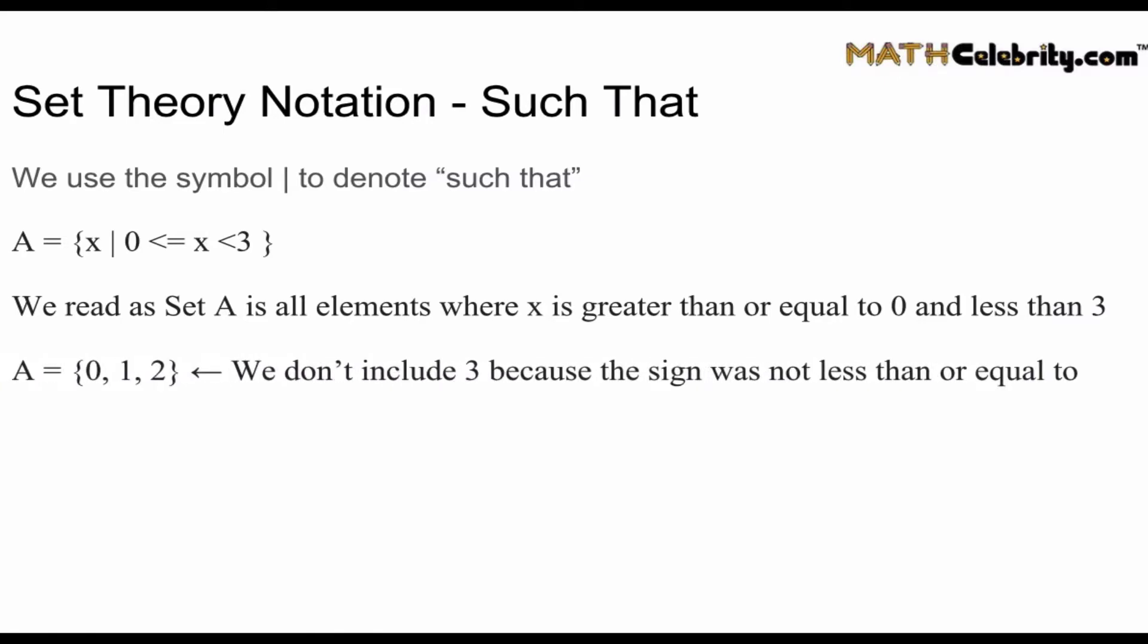Now the set A is written as zero, one, and two. And notice we don't include three because above and as such that there wasn't a less than or equal to sign. So it's zero, one, and two.